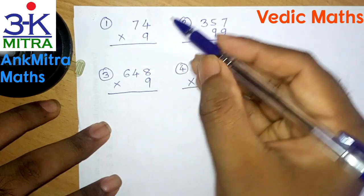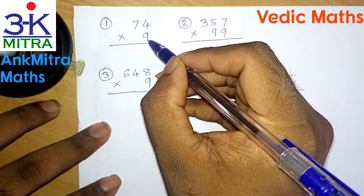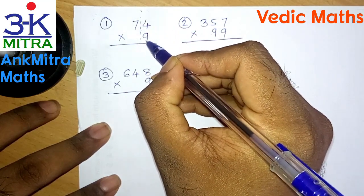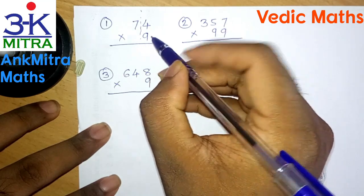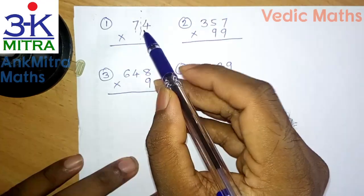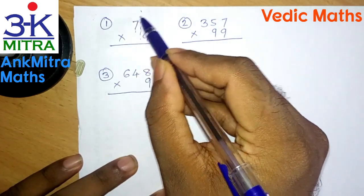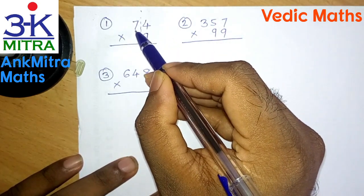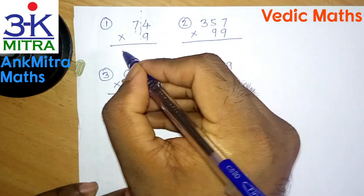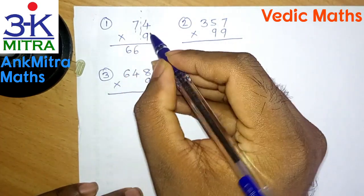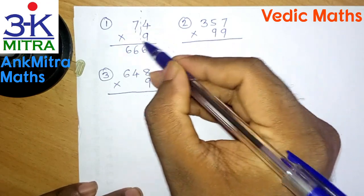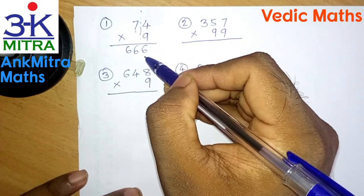In such situations where we have fewer digits in the multiplier, we draw a partition line just to the left of how many digits there are in the multiplier. Here we had only a single 9, so we draw the partition line accordingly. We then take the number 74 and subtract one more than the digit on the left, which is 8. Subtracting 8 from 74 gives us 66, which we write on the left. Then we subtract 4 from the base of 9, that is 10 — so 10 minus 4 is 6. The final answer for 74 multiplied by 9 is 666.